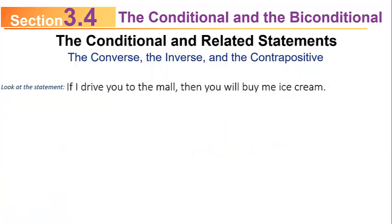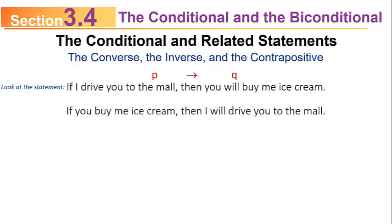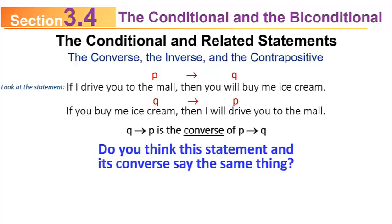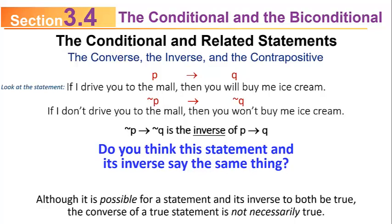Consider: if I drive you to the mall, then you will buy me ice cream. P is 'I drive you to the mall,' Q is 'you will buy me ice cream.' The converse — Q implies P — is: if you buy me ice cream, then I will drive you to the mall. Do these two statements say the same thing? Although it's possible for a statement and its converse to both be true, the converse of a true statement is not necessarily true.